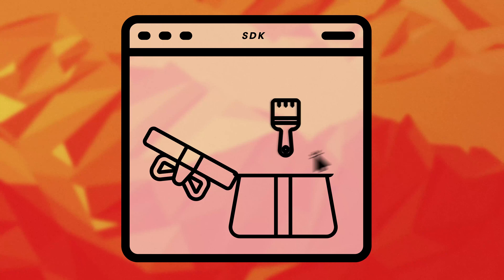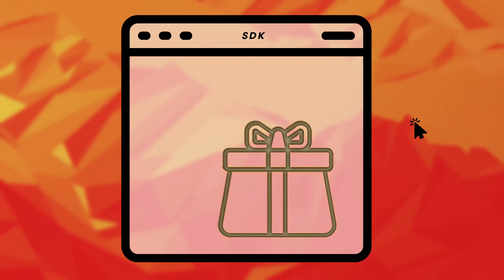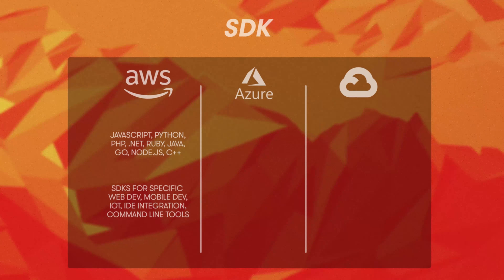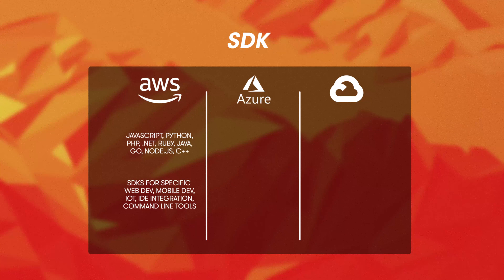An SDK is a nicely wrapped package of tools for third-party developers to produce applications using a particular framework. GCP, Azure, and AWS all have one — well, when I say one, I mean a ton. It is standard to have an SDK for your platform, but as my old mentor said, the good thing about standards is that there are so many to choose from. AWS offers SDKs for nine different languages, including JavaScript, Python, PHP, .NET, Ruby, Java, Go, Node.js, and C++.